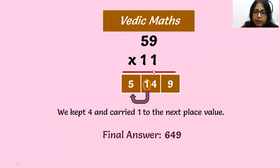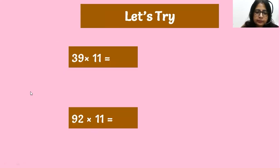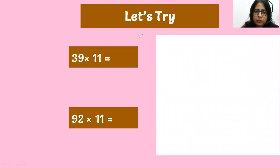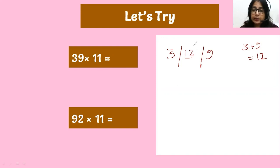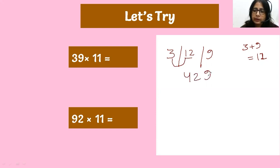Level up! Now let's go with three digits or carrying. For 39 into 11: write three, give the space, write nine. In that space, three plus nine is twelve — but twelve is a two-digit number. So we write two in the space and carry forward the one. That means we add one to the three, making it four. So the answer is 4, 2, 9. Whenever the middle sum is two digits, just move the tens place to the next level — carry forward.